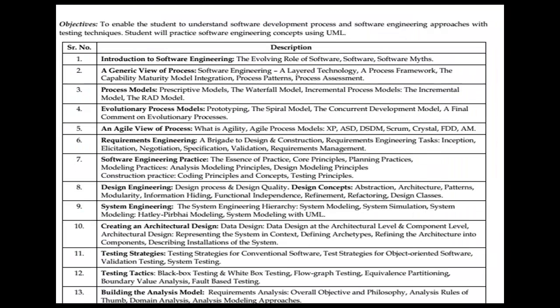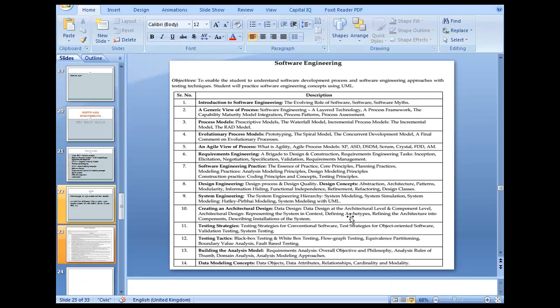We now move to Chapter 2, which is the generic view of process. We have around 14 chapters here, so this chapter would take about half an hour, while others could take seven to ten hours. The generic view of process covers software engineering as a layer technology, a process framework, the Capability Maturity Model, process patterns, and process assessment.